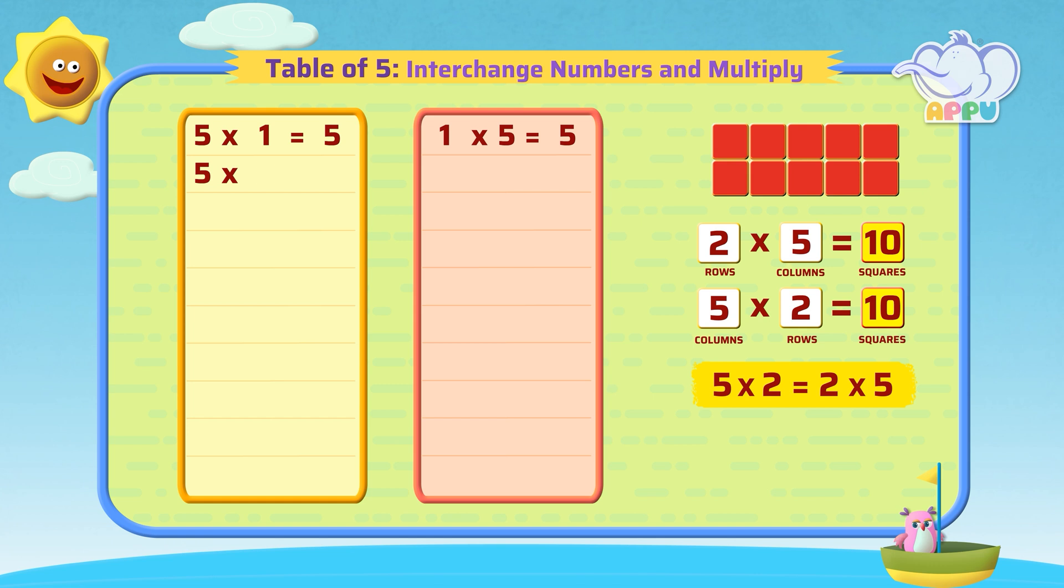5 times 2 equals 10. So 2 times 5 equals 10. 5 times 3 equals 15.